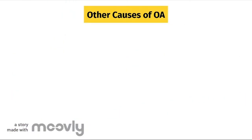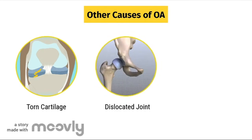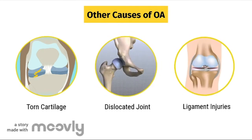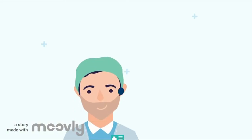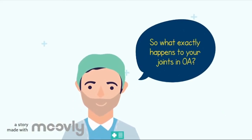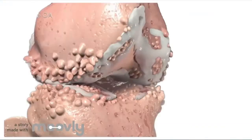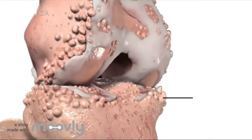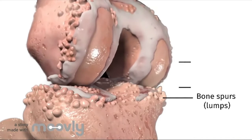Other causes of OA include torn cartilage, dislocated joint, and any ligament injuries. In severe OA, bone spurs — which are small growths of bone — form.